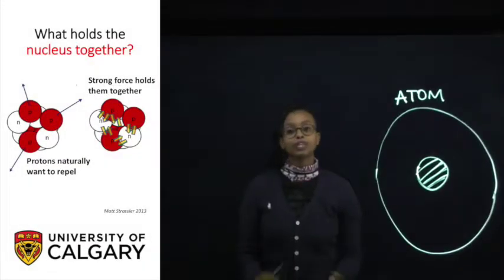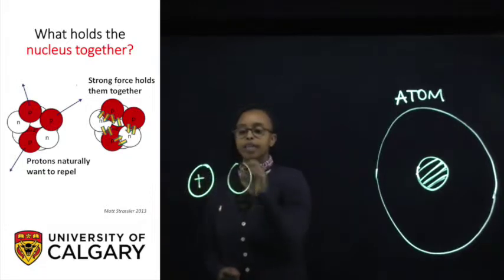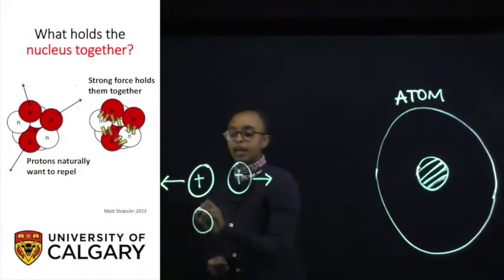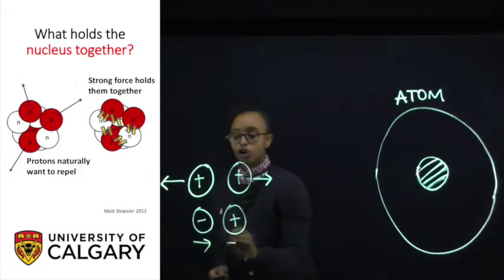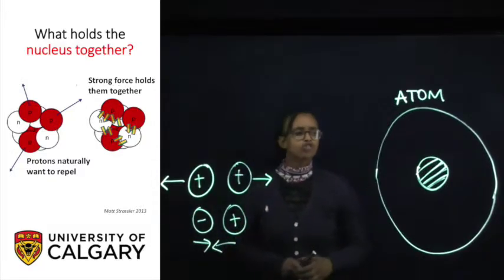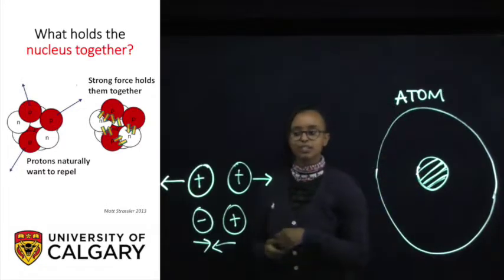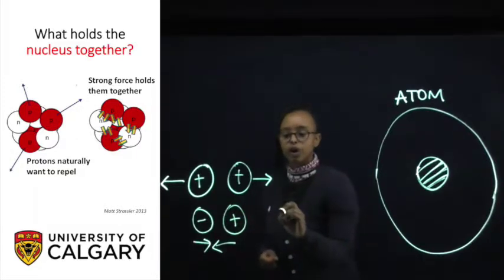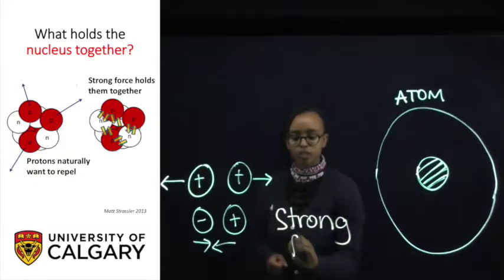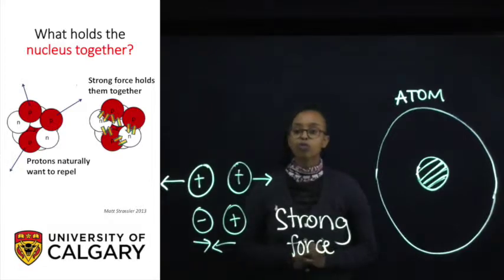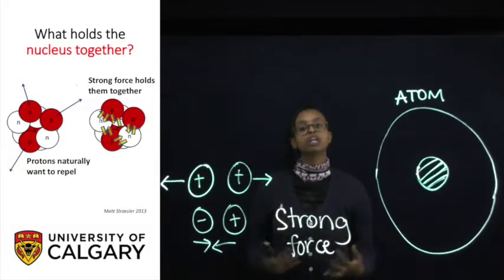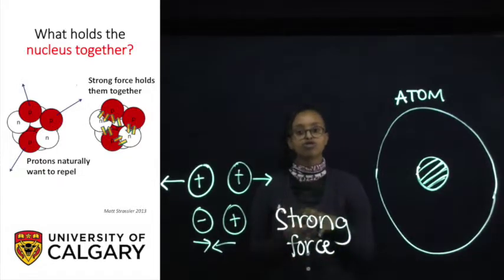If you know anything about the interaction of charges, two positive charges will repel, and two particles with opposite charges will attract one another. So what is keeping this nucleus so close together, since it consists only of positive charges and neutrons? The phenomenon keeping the nucleus together is known as the strong force. This strong force only works over very small distances, like within an atom, and it's so strong that it overcomes the repulsive nature of positive charges to keep those protons close together.